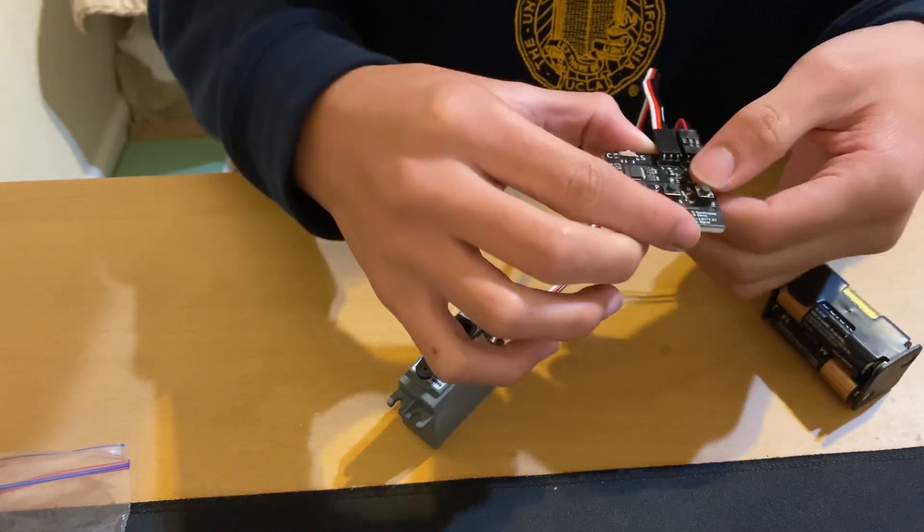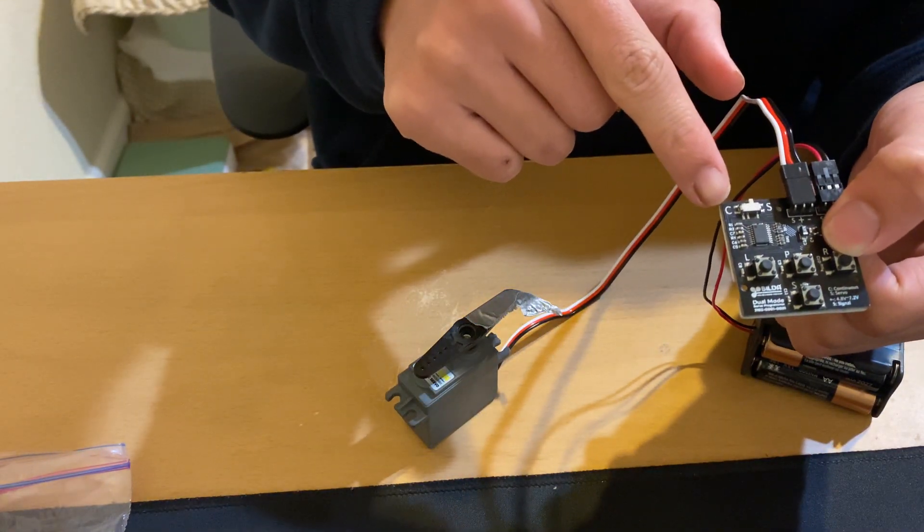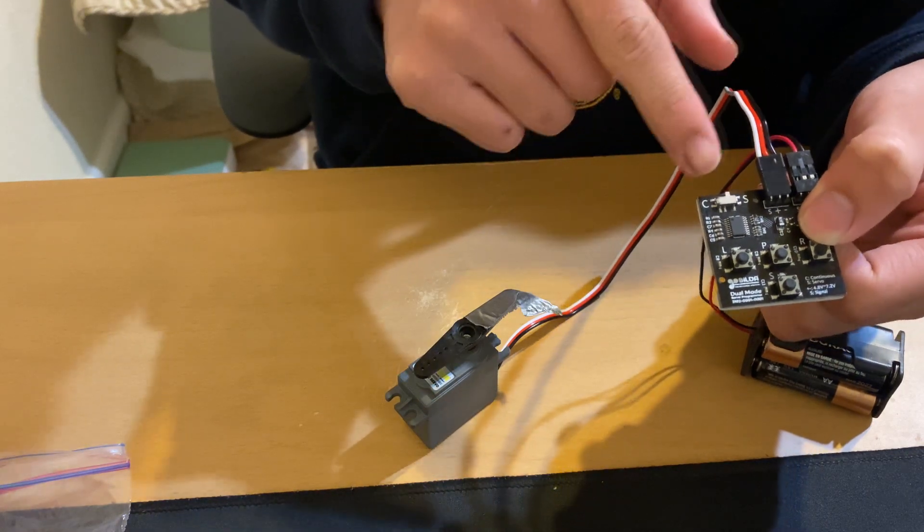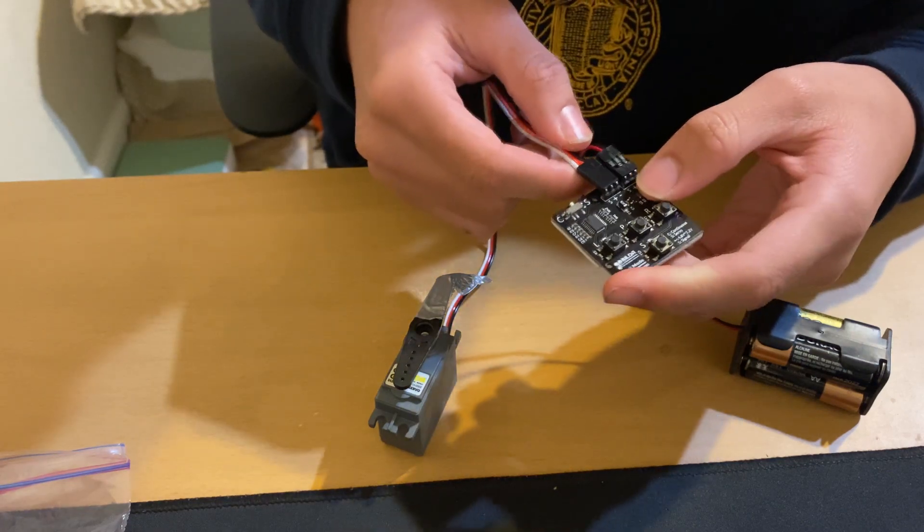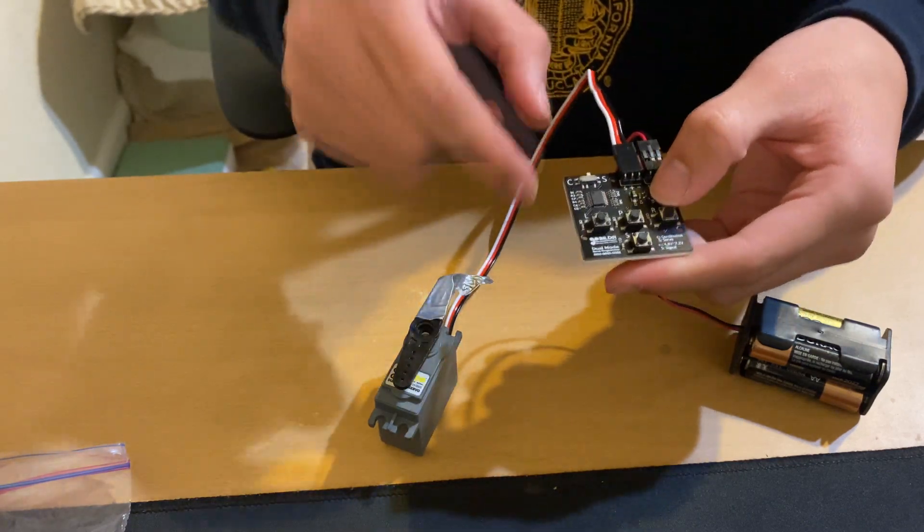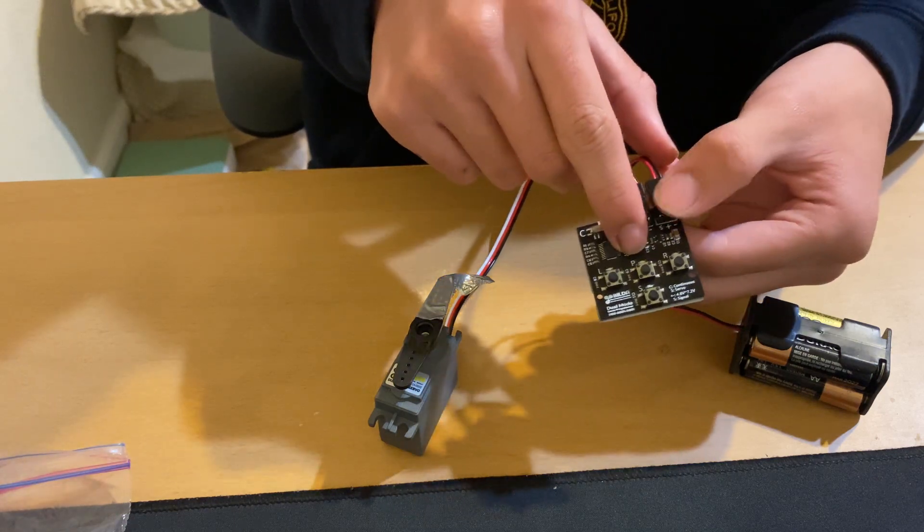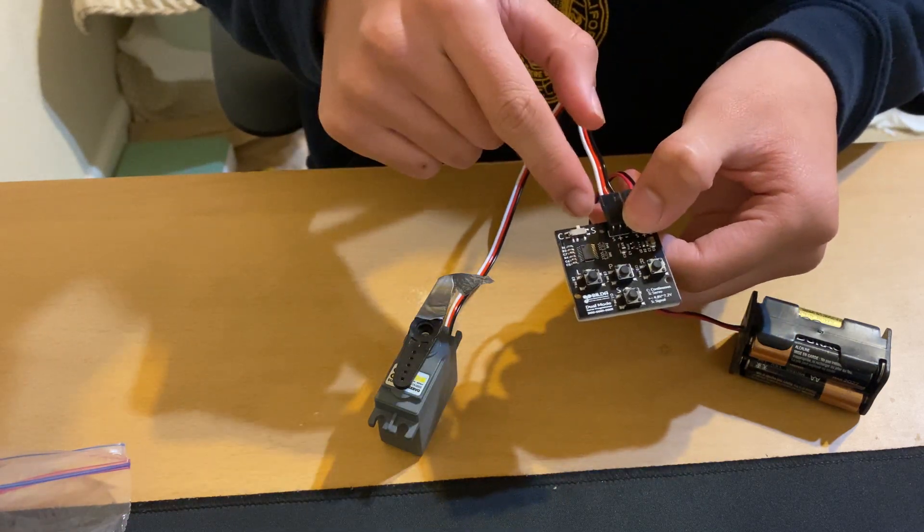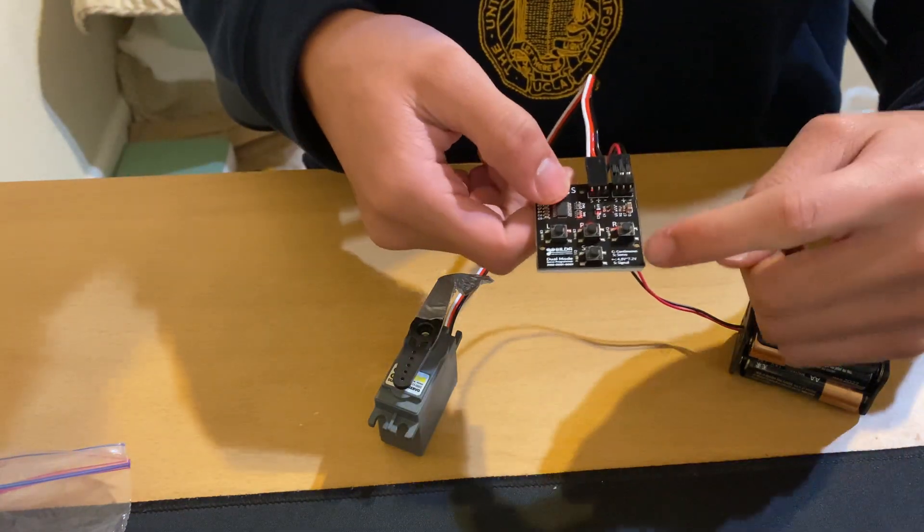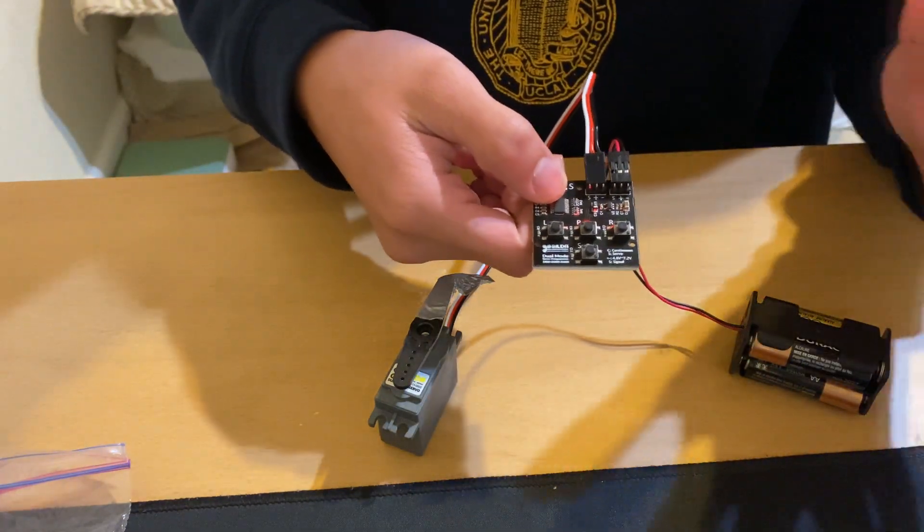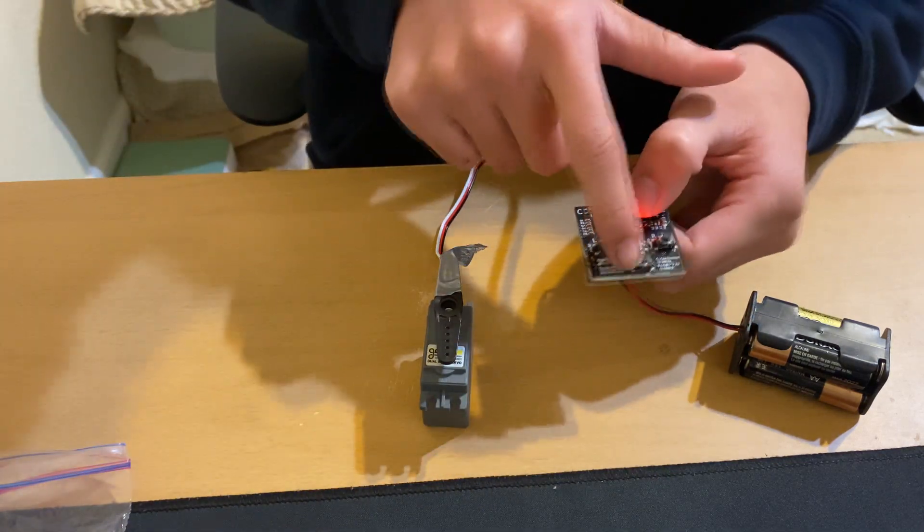So the very first thing that we should notice is there is this switch right here. C would stand for continuous and S would stand for servo. So let's say we want to go to servo right now. We would stay in this S and then we click this P button. This P stands for program. So we're going to program our servo to be a servo. Let's program. And then this S button is basically like a test button. So if we want to automatically test the bounds of the servo, we're going to click this.